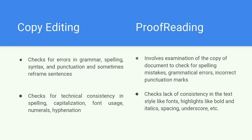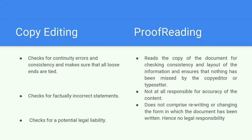As mentioned earlier, copy editing addresses differences such as American versus British spelling — it looks for technical consistency beyond just individual words. Copy editing also checks for continuity errors and consistency, making sure all loose ends are tied, especially in fiction writing. Proofreading reads the copy of the document for checking consistency and layout of the information, and ensures that nothing has been missed by the copy editor or typesetter — it is essentially a technical job.